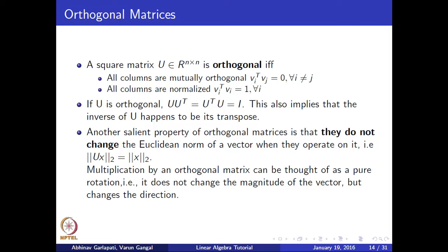An additional interesting property: when we multiply an n cross 1 vector x by an n cross n orthogonal matrix U, the Euclidean or l2 norm of the vector x remains the same. Intuitively, orthogonal matrices U perform only pure rotation when multiplying vector x — they only change the direction of a vector but do not change its magnitude.